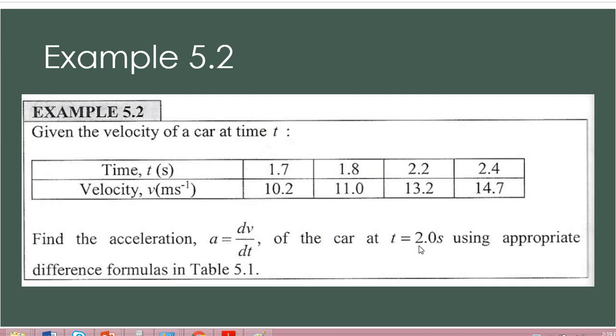Using appropriate difference formulas in Table 5.1. So if you refer here, the question asks you to find t=2. However, in this table the value of 2 is not given. So how do we want to do this? Previously we had the value, now we don't have that value.